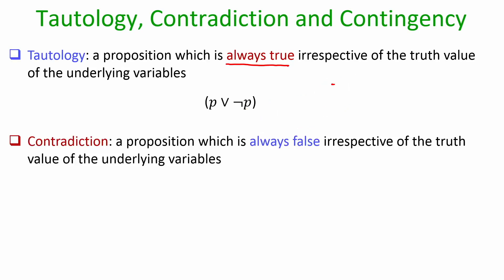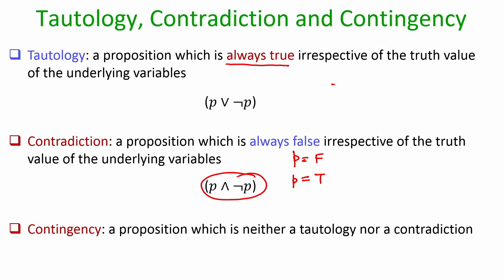A proposition is called a contradiction if it is always false irrespective of what truth value is assigned to the underlying variables. An example of a contradiction is P conjunction negation P — you can verify that this statement is false for every possible truth assignment of P. A contingency is a proposition which is neither a tautology nor a contradiction — it can sometimes be true and sometimes be false. For instance, P conjunction Q is false when P is true and Q is false, but true when both P and Q are true, so it is a contingency.